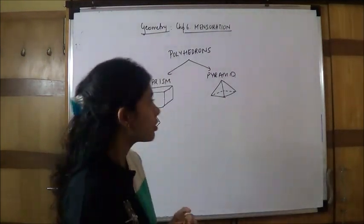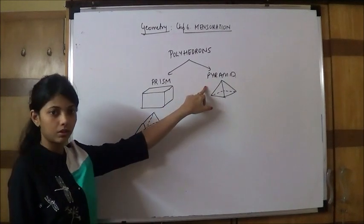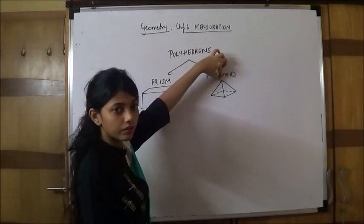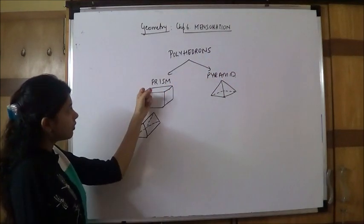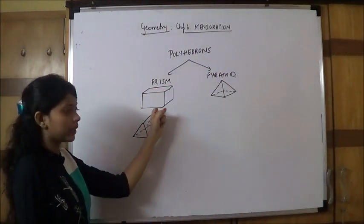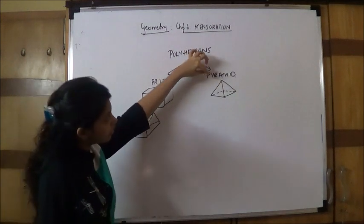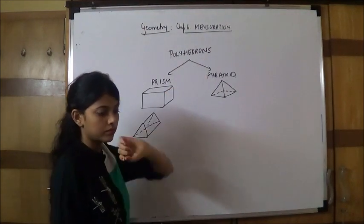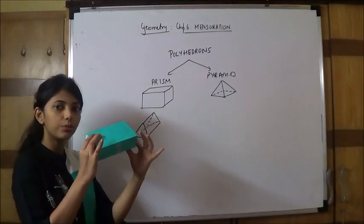There are two types of polyhedrons: prism and pyramid. Pyramid means the vertical is a single vertex and here we can have a whole face or a whole line. The figures with a pointed vertex is called a pyramid. This is a prism.